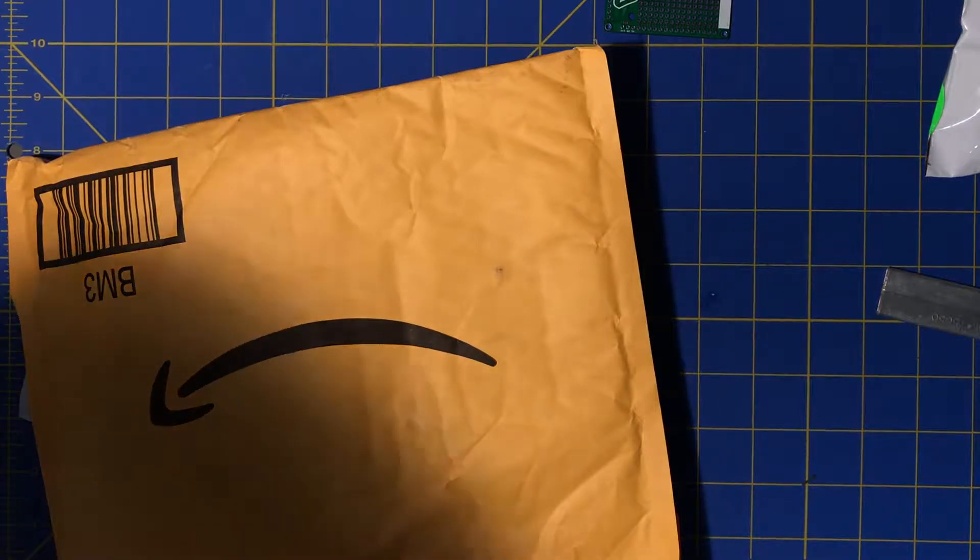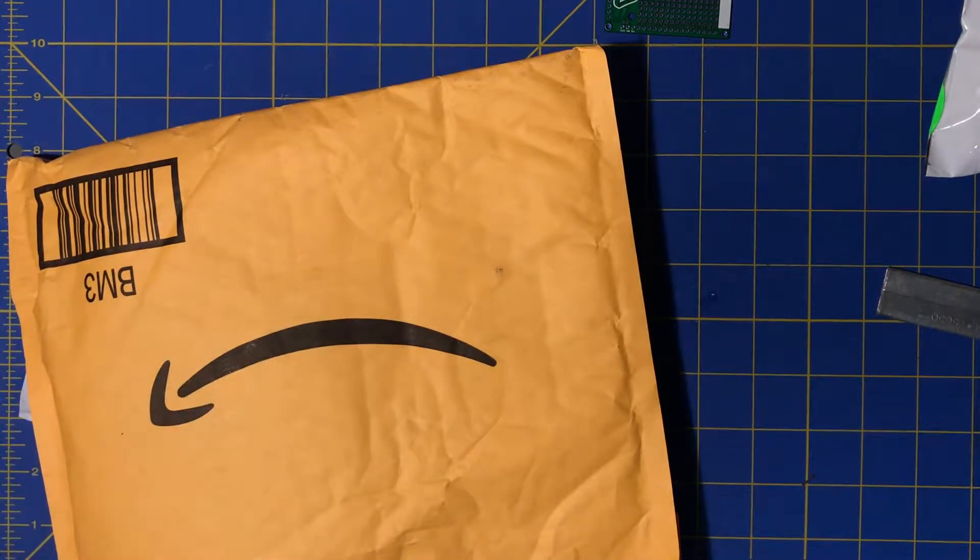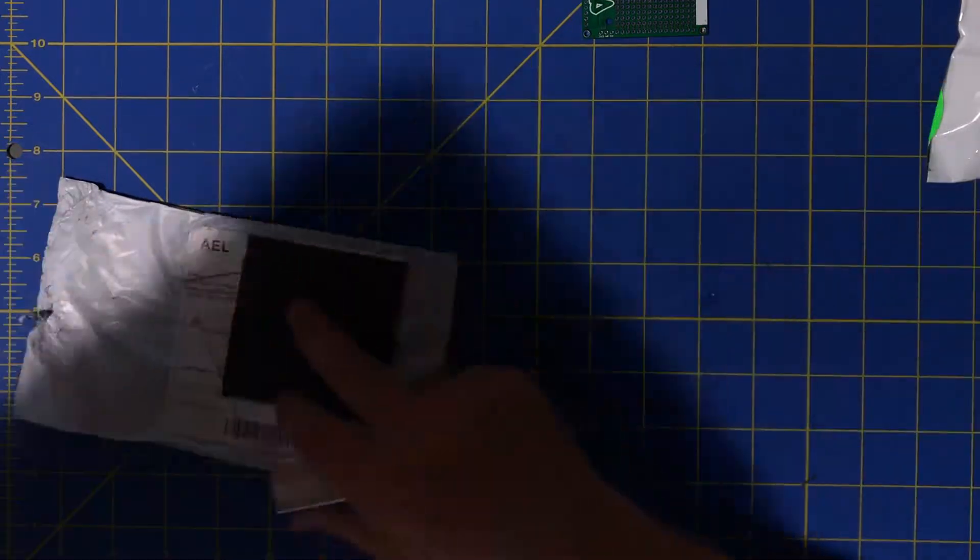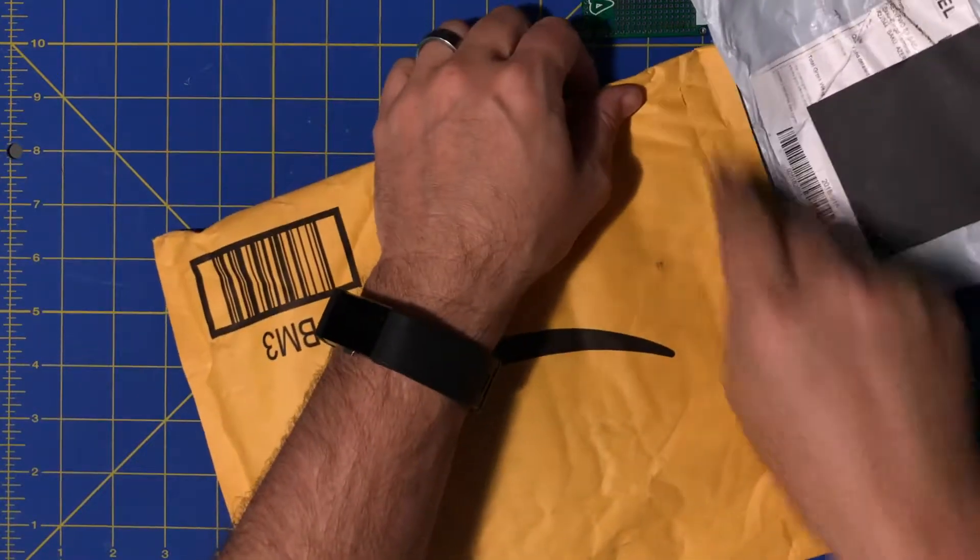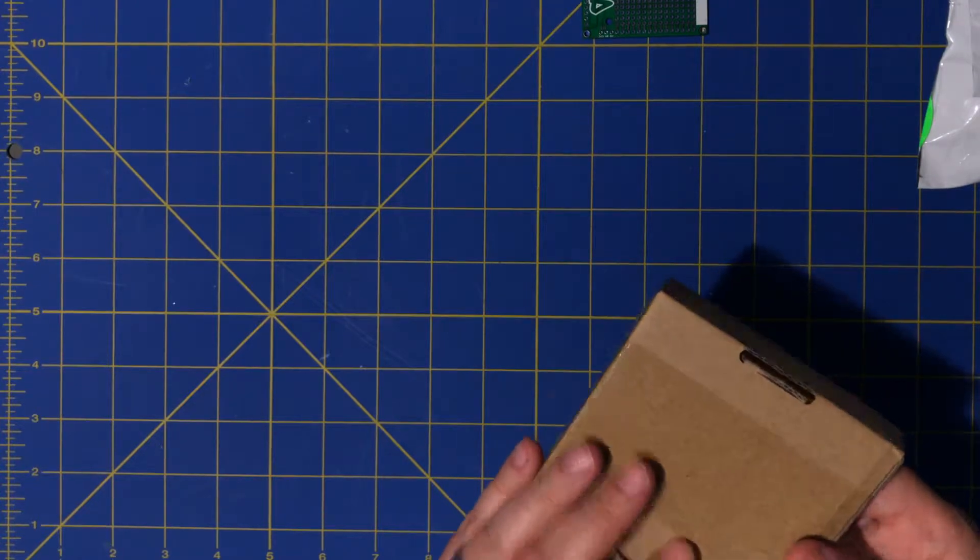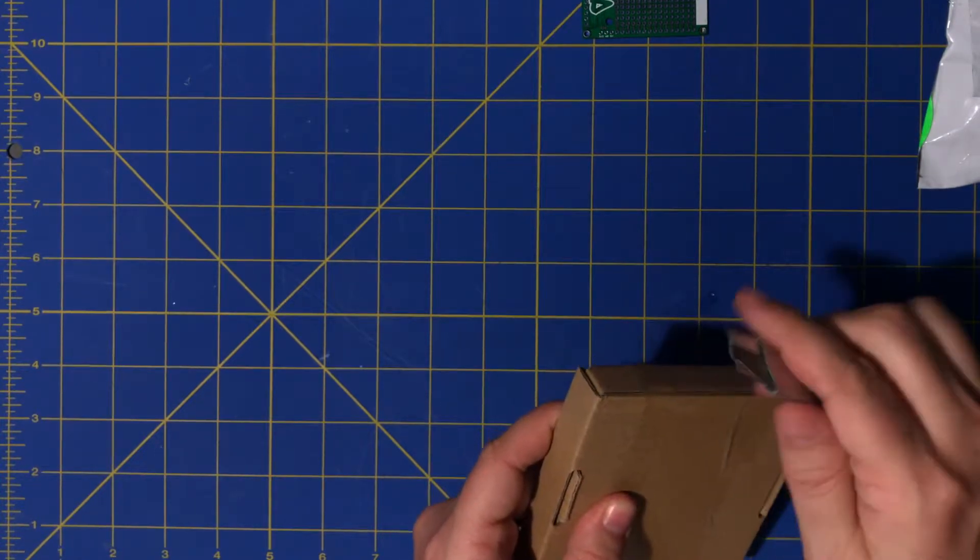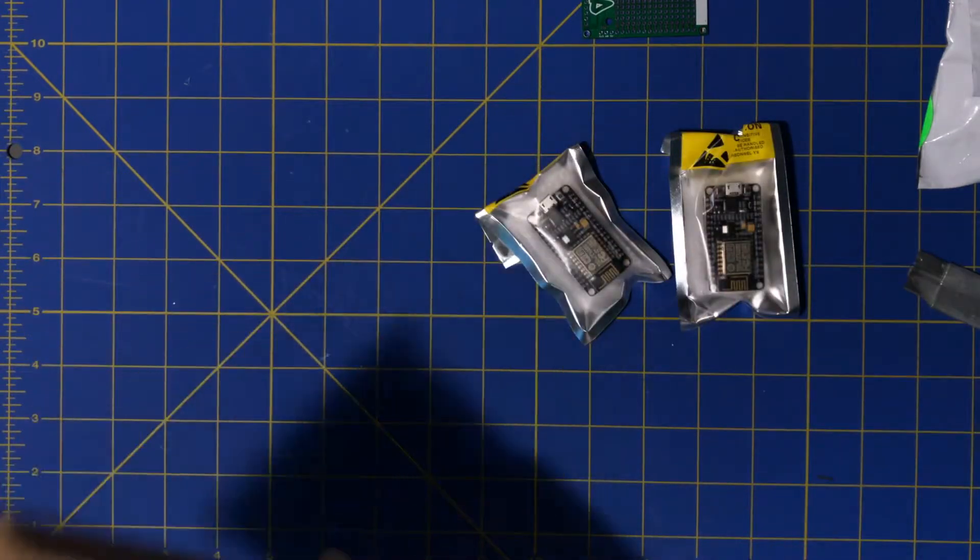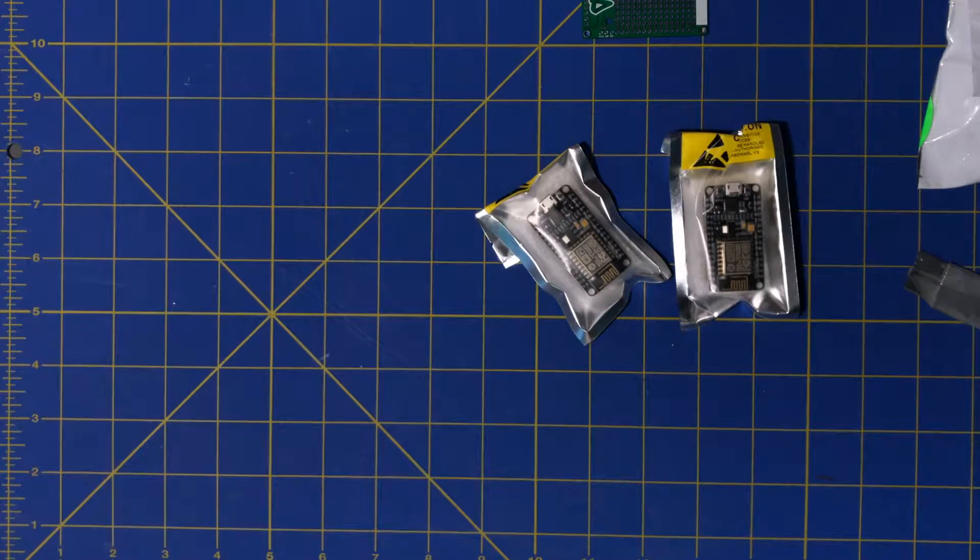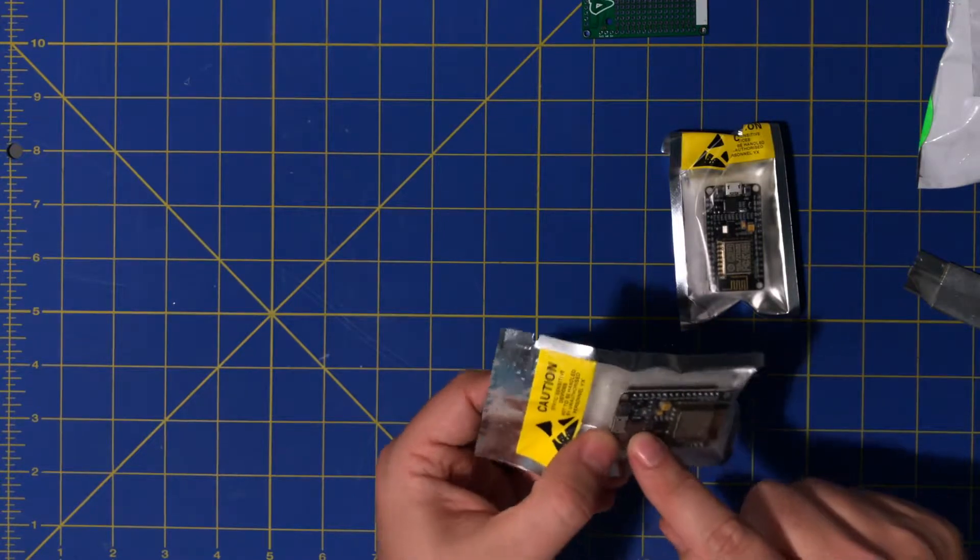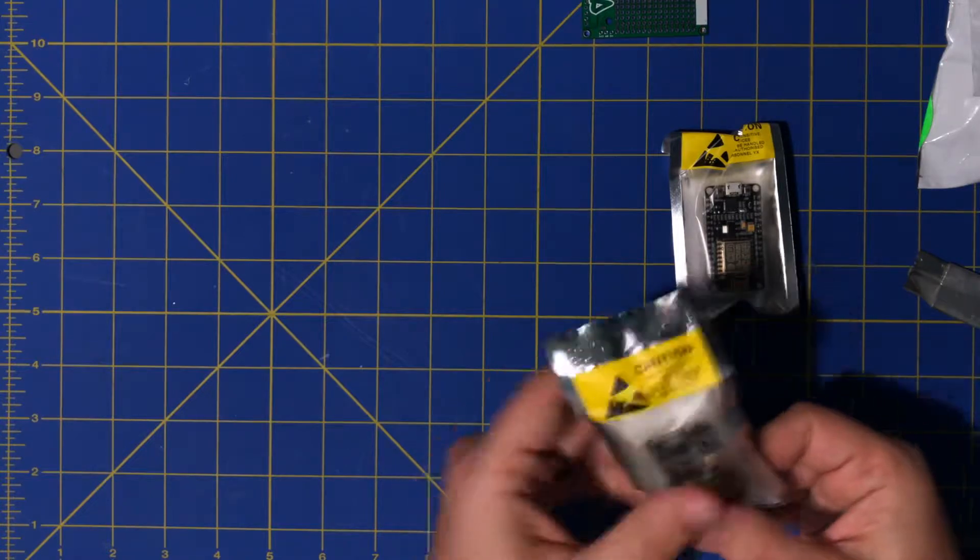Found another package on the floor, I don't know what this is. Package from Amazon. HiLetgo, which is a pretty popular rebrander on Amazon, had a sale that I couldn't refuse. I think this is two NodeMCU's. I got them for about four-fifty, five dollars a piece, something like that. They look pretty good. They're the CP2102s, so the good ones.